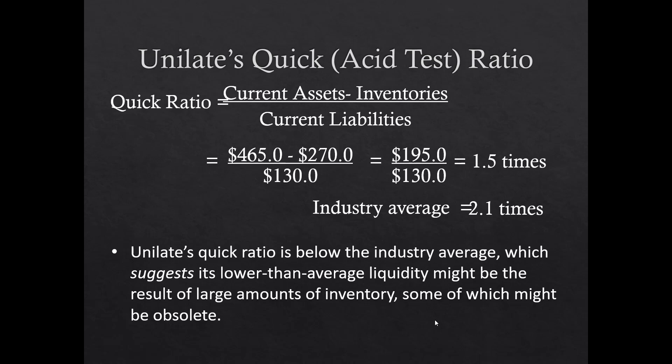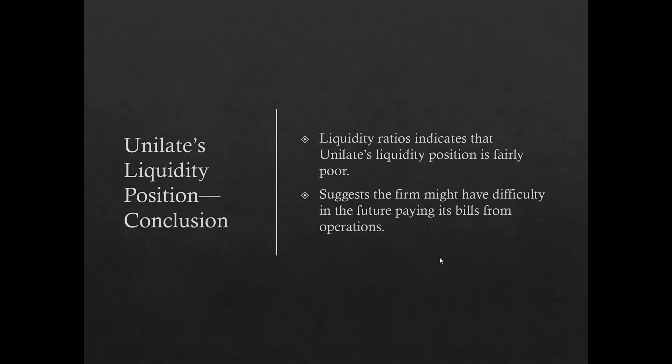In finance, we're looking for what questions to ask management. Why did inventory increase $70 million when sales didn't rise much? What is the aging of that inventory — is some of it obsolete and needing to be written off? The liquidity ratios indicate Unilate's position is fairly poor relative to industry competitors, suggesting difficulty paying bills from operations. Looking at 2017 to 2018, these ratios are continuing to decline, reinforcing that performance seems to be degrading, which may also explain the declining stock price.